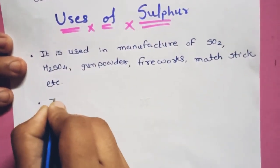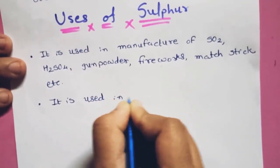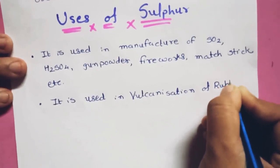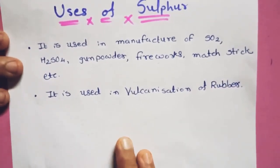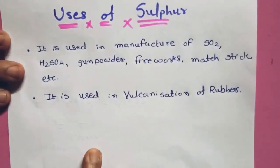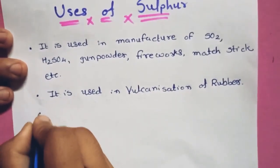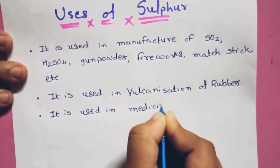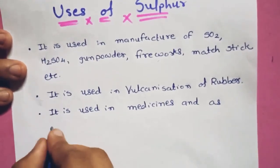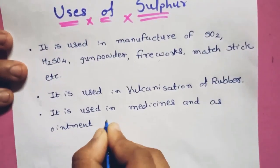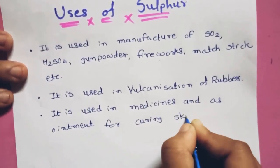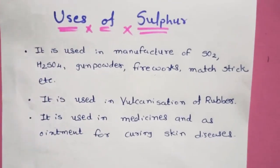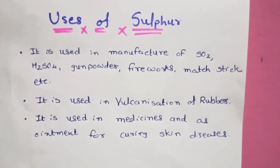Another use of sulfur is in the vulcanization of rubber — natural rubber is treated with sulfur to improve its properties. Sulfur is also used in medicine and as an ointment for curing skin diseases. It is also used as an antiseptic. These are the main uses of sulfur.